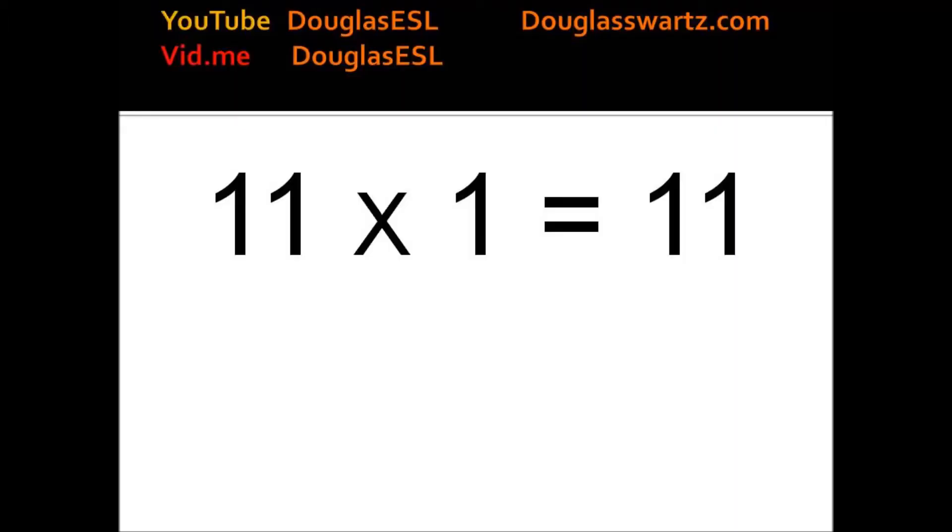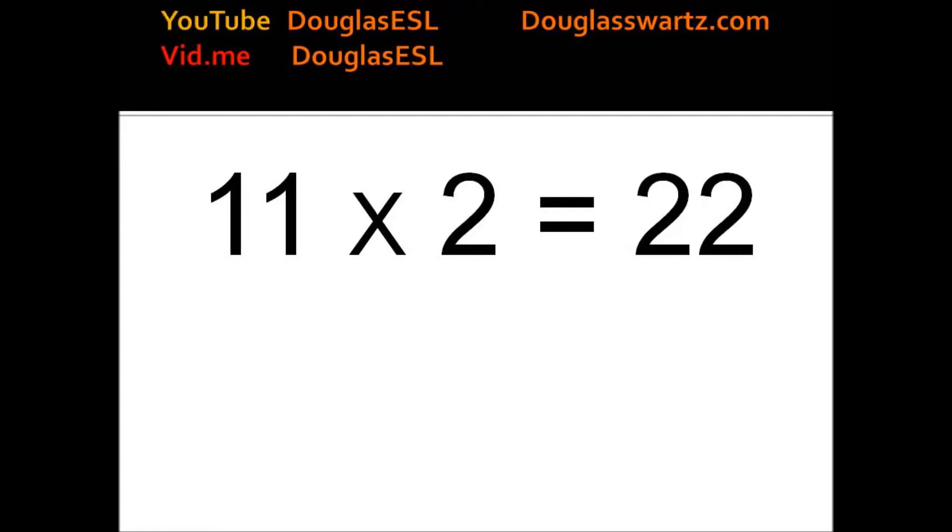11 times 1 is 11. 11 times 2 is 22. 11 times 3 equals 33. 11 times 4 equals 44.